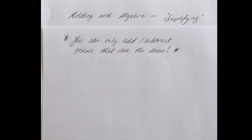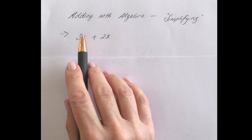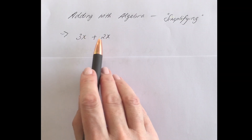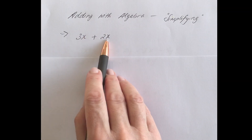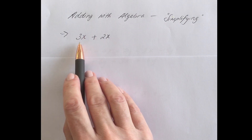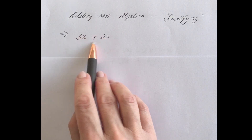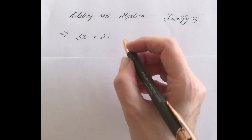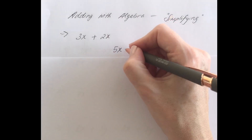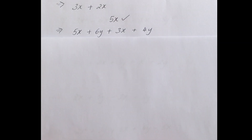Let's take a look at an example. Say you have 3x plus 2x. Because they're both x terms we can add them together, and if you have three x's and you add two x's together you will get five x's. So that's your answer to that one.